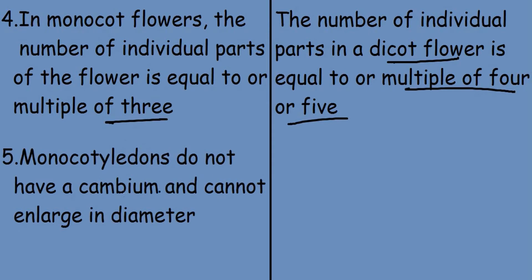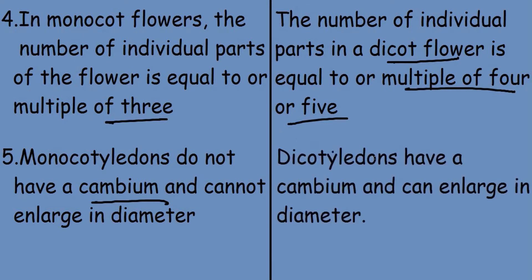Monocotyledons do not have a cambium and cannot enlarge in diameter, while dicotyledons have a cambium and can enlarge in diameter.